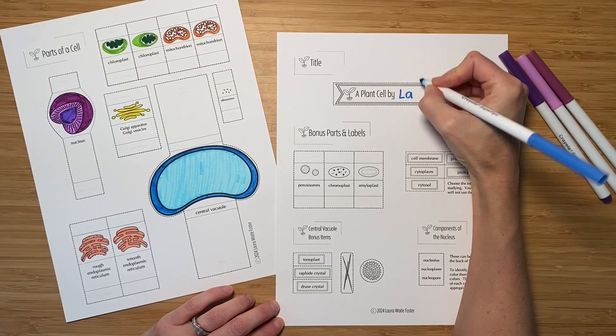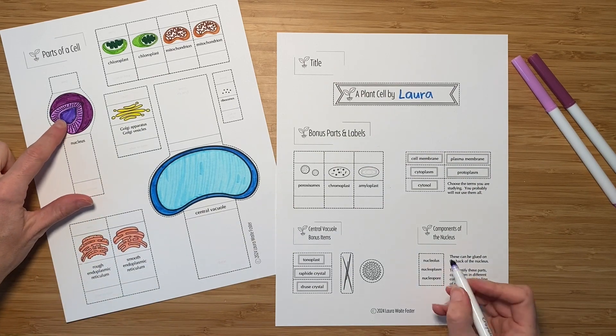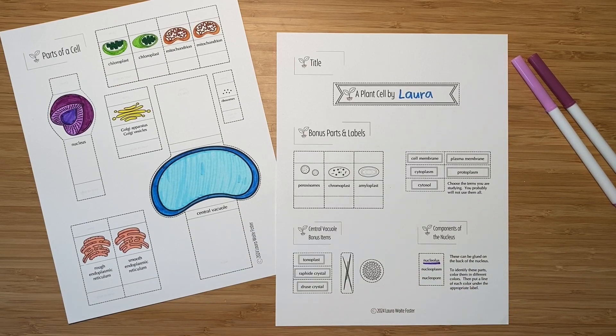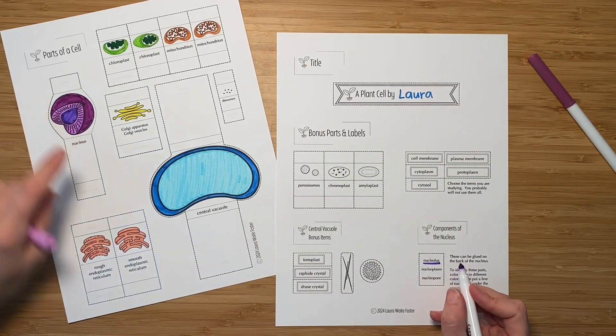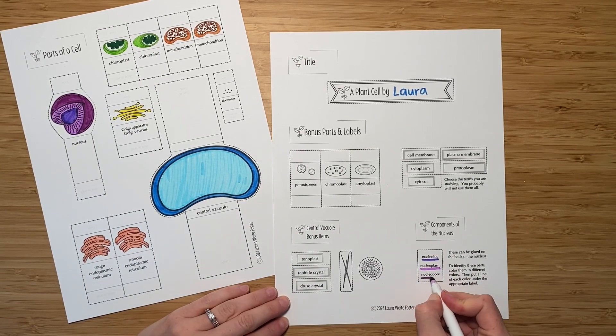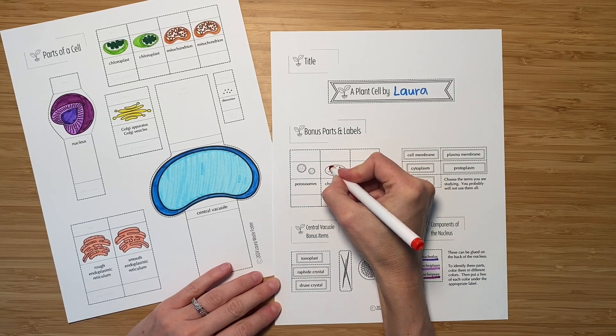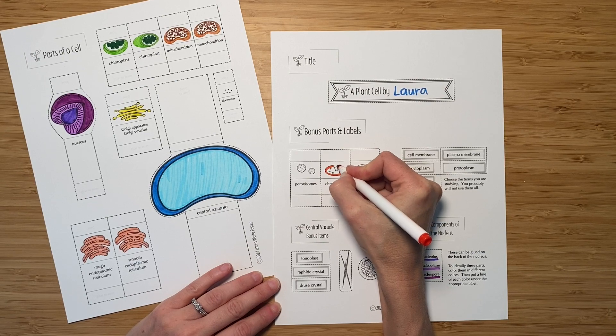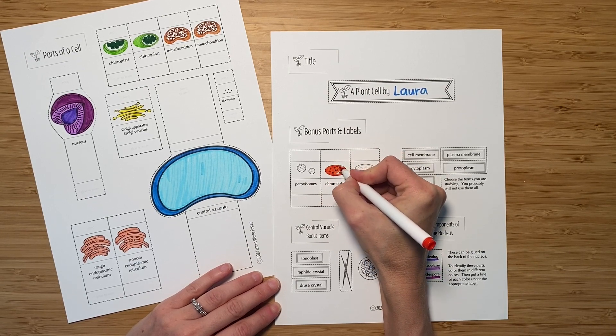Be sure to write your name on the title. You may want to color code your nucleus. Use the same color marker that you used to color each portion and underline the name for it or put a dot next to it. Aside from the title, the items on this page are bonus items. They don't necessarily occur in every type of plant cell. But if you've learned about them and you'd like to include them, they're there for you to use.